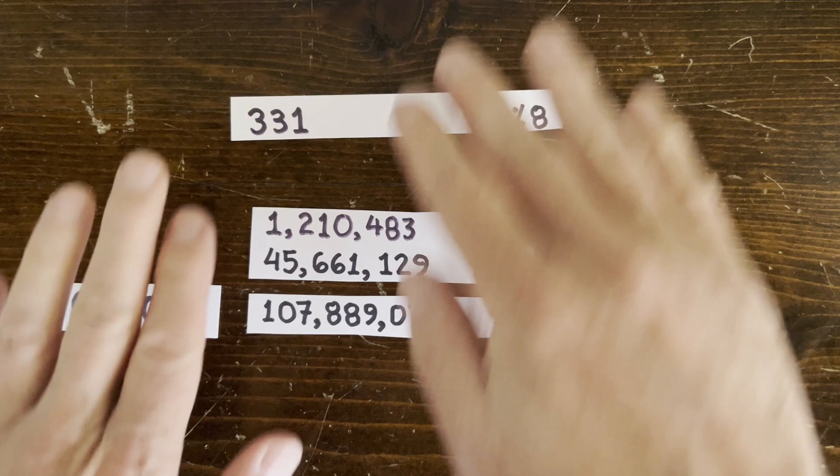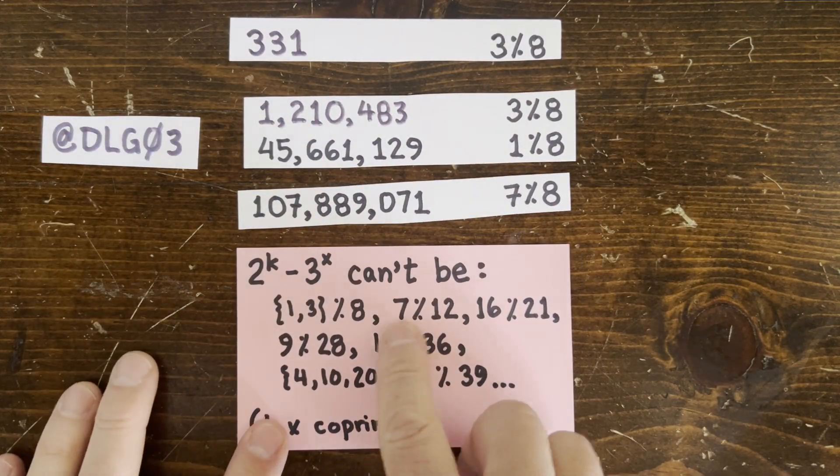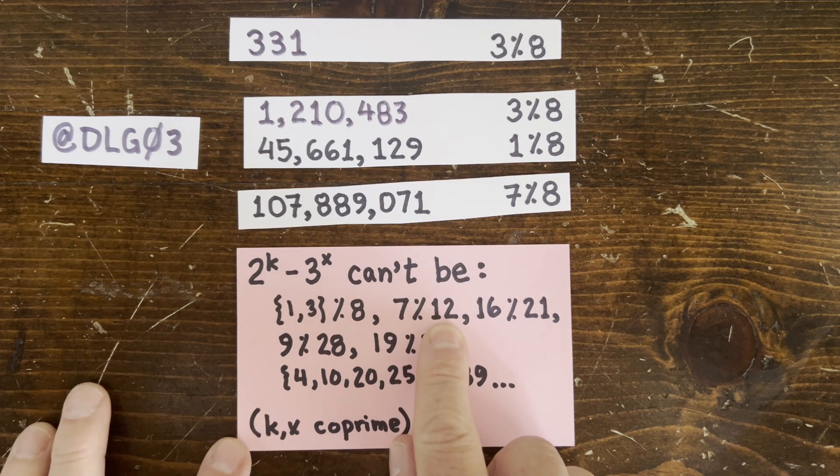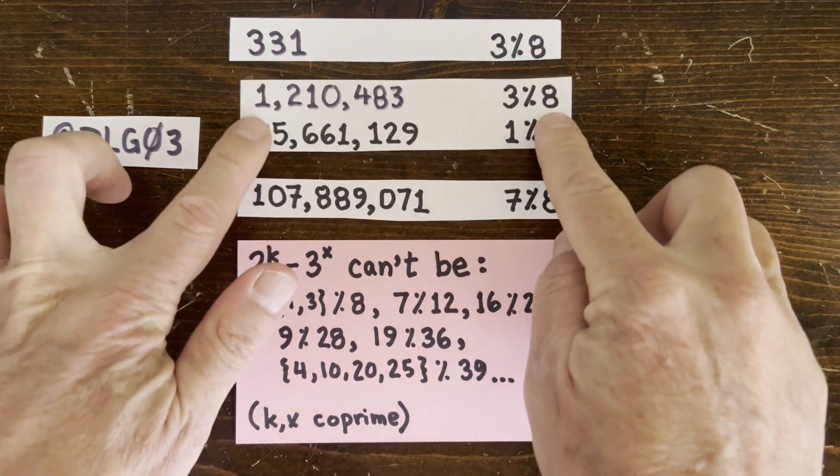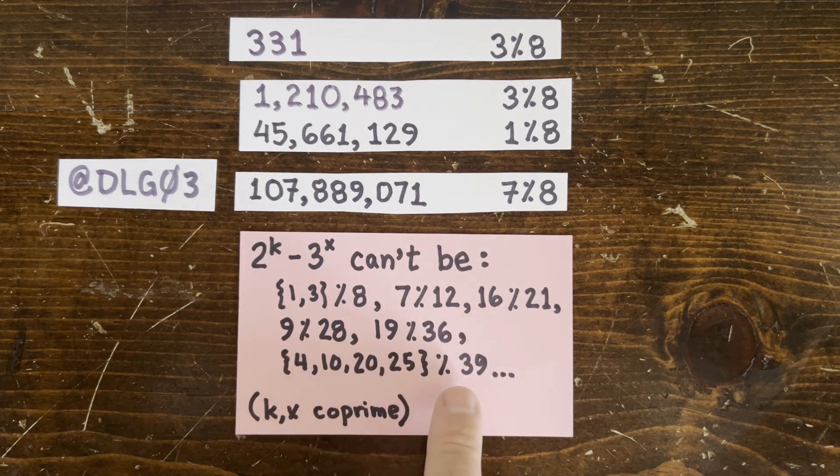So it turns out that 2 to the k minus 3 to the x can only be 1, 5 or 11 mod 12. It can't be 7 mod 12 unless k and x are both even but then they wouldn't be co-prime.